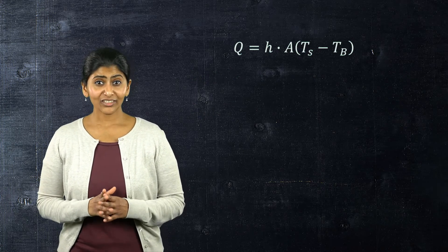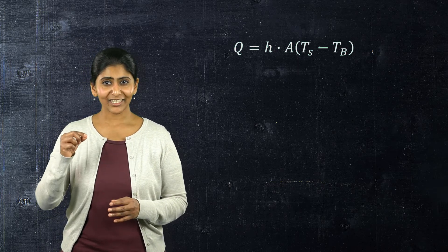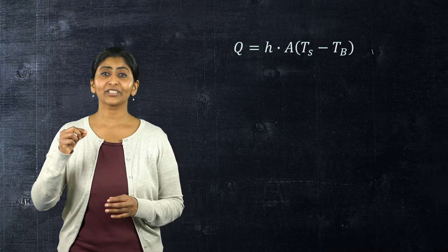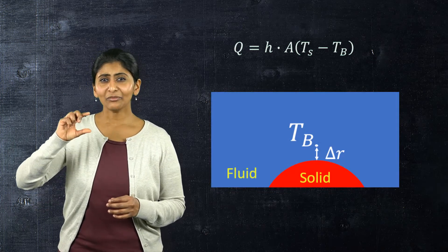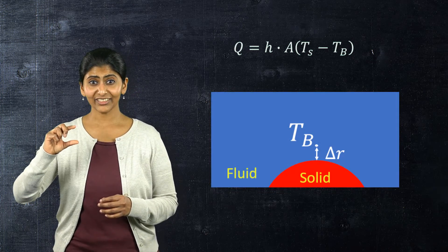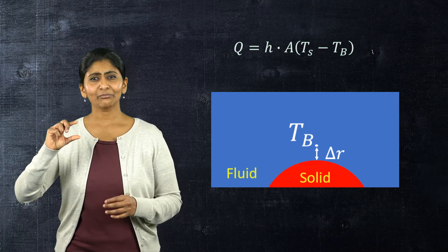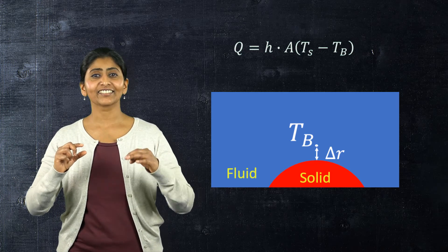The bulk temperature is a required input for the analysis and serves as a reference point for the convective boundary condition equation. It is worth noting that this bulk temperature is intended to characterize the temperature of the fluid at some distance from the solid surface, rather than the temperature directly at the surface boundary.